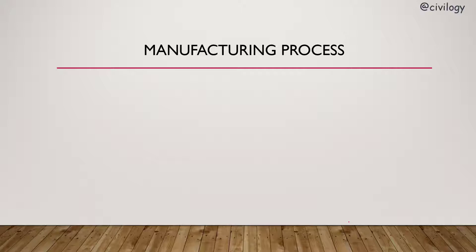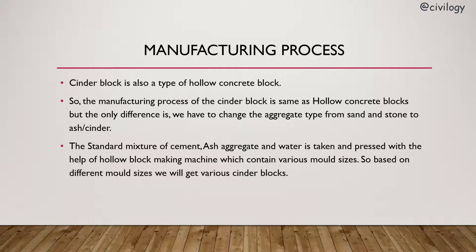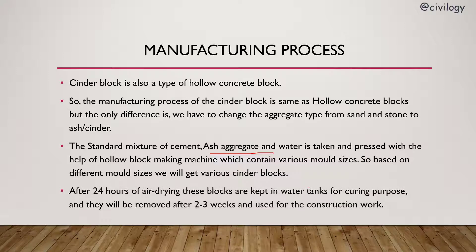What is the manufacturing process? Cinder block is also a type of hollow concrete block, so the manufacturing process is the same as hollow concrete blocks. The only difference is we have to change the aggregate type from sand and stone to ash or cinder. The standard mixture of cement, ash aggregate, and water is taken and pressed with the help of a hollow block-making machine, which contains various mold sizes, giving us various cinder blocks.